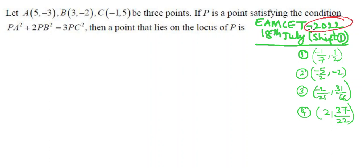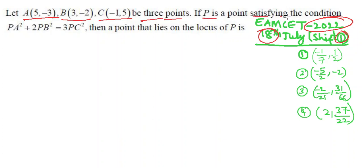This is MSet 2022, 18th July, shift 2, question 1. This is from locus. Let capital A be (5, -3), capital B be (3, -2), and capital C be (-1, 5) — three points. If P is a point satisfying the condition PA² + 2PB² = 3PC², then find a point that lies on the locus of P.